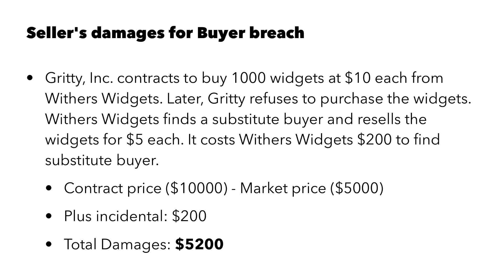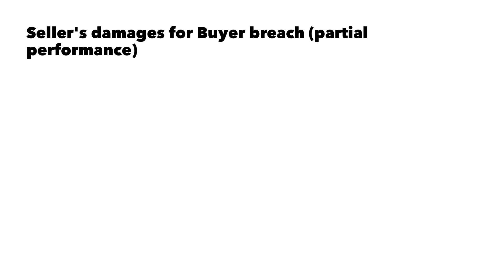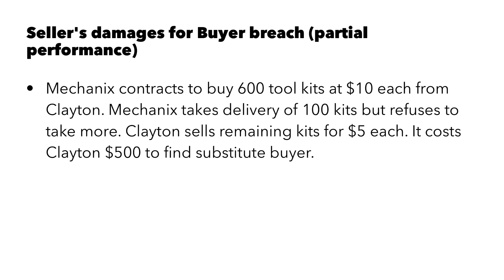On your test, you'll probably have a problem similar to this and it's a pretty straightforward matter to work it out. Let's look at what happens in the case of partial performance. If the buyer has partially performed, how do we calculate the damages for the seller? In this example, Mechanics has contracted to buy 600 tool kits at $10 each from Clayton, the manufacturer. Mechanics takes delivery of the first 100 kits but then refuses to take any more. Clayton is forced to sell the remaining kits for $5 each, and it cost Clayton $500 to find a substitute buyer — that's incidental damages.